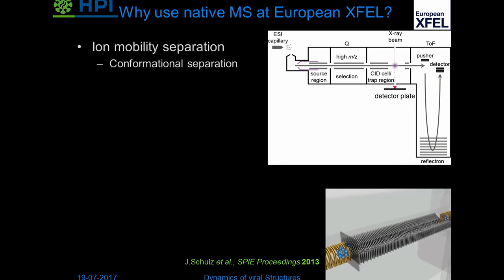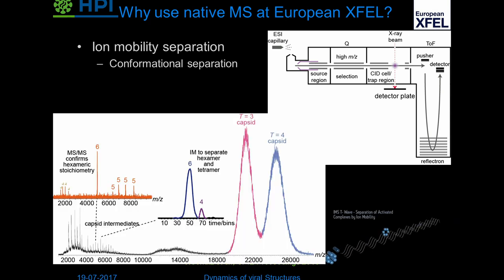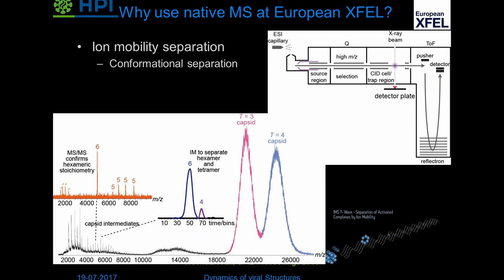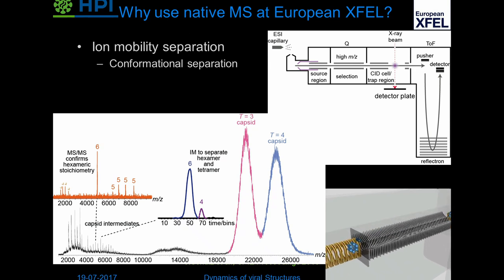We can go one step further and, behind the quadrupole, introduce ion mobility separation to pick out certain conformations. Here's an old example where we first selected with the quadrupole a single species — this is just a fragmentation experiment to prove that it is what it is — and on the neighboring peak we separated two species with ion mobility. So this is perfectly possible.